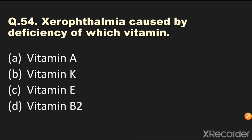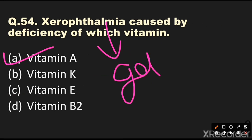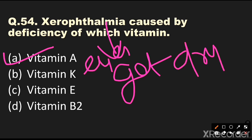Question number 54: Xerophthalmia is caused by deficiency of which vitamin? Options are vitamin A, vitamin K, vitamin E, or vitamin B2. The answer is vitamin A. Xerophthalmia is a condition in which the eyes get dry and the tear ducts also get dry.